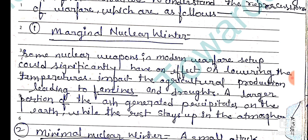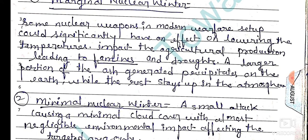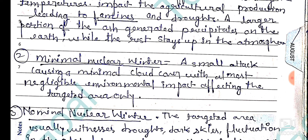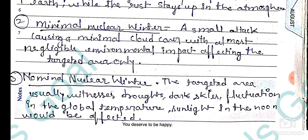The first is marginal nuclear winter. Some nuclear weapons in the modern warfare setup could significantly lower the temperature, impacting agricultural production and leading to famines and droughts. A large portion of air generated precipitates on the earth while the rest stays up in the atmosphere.